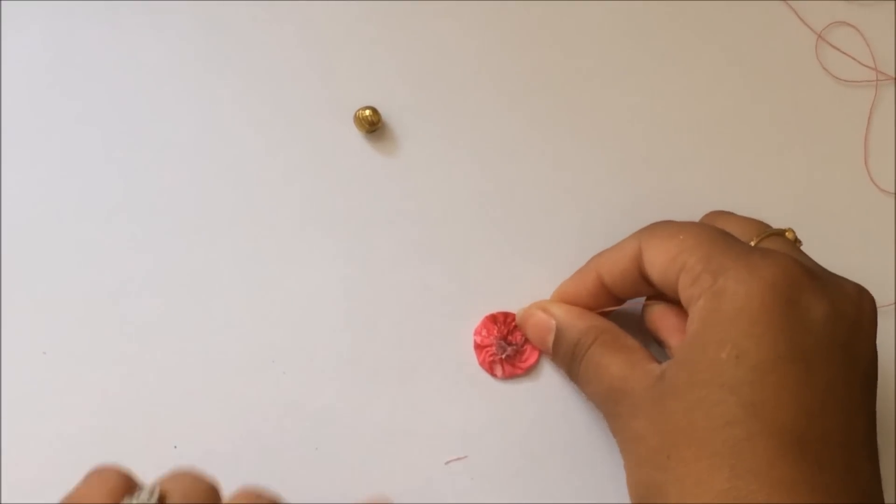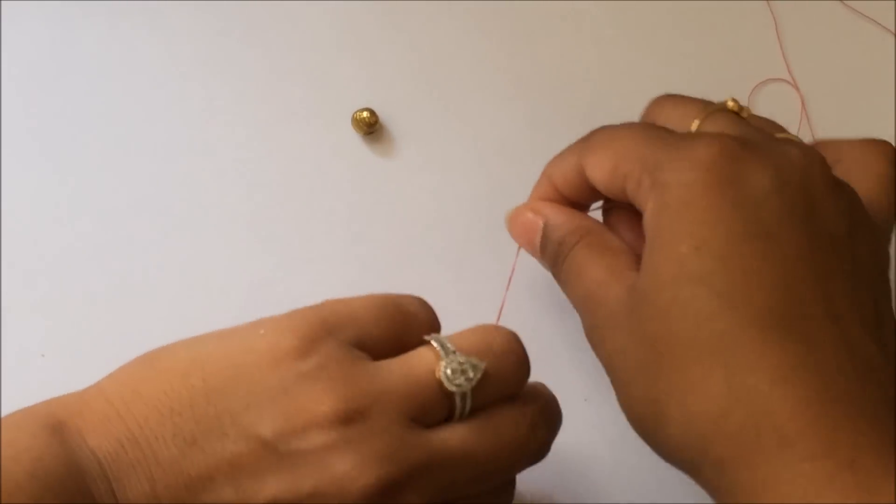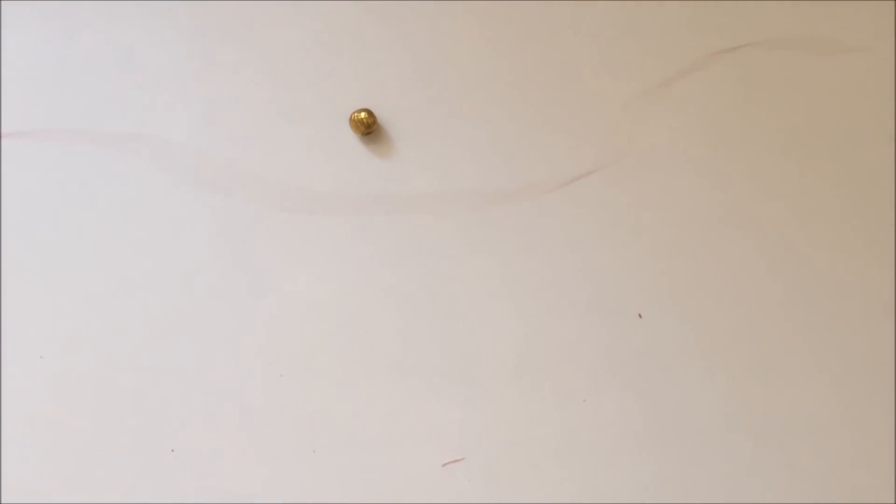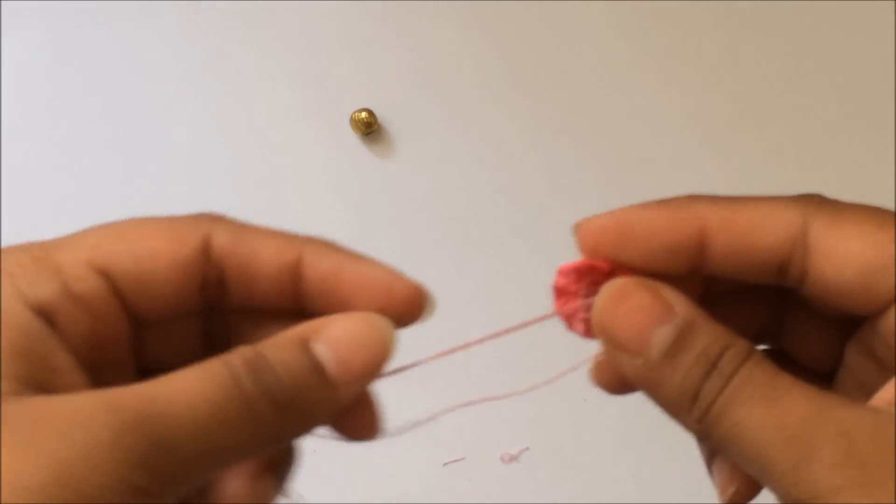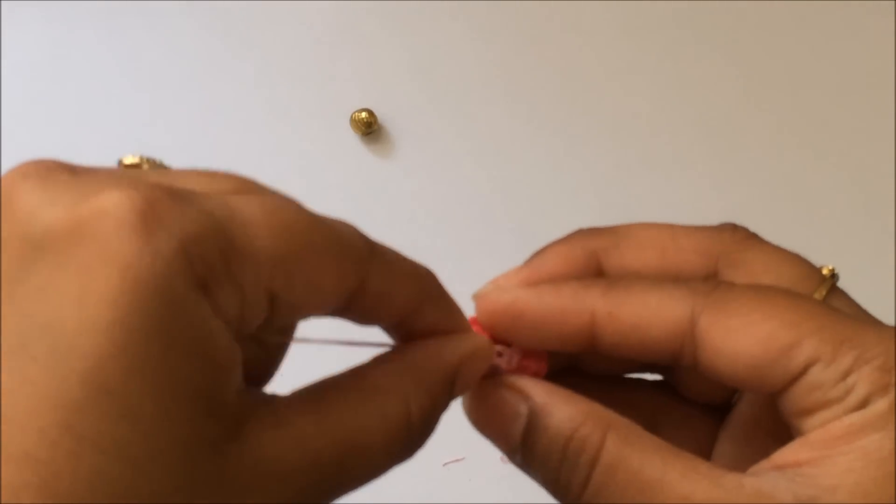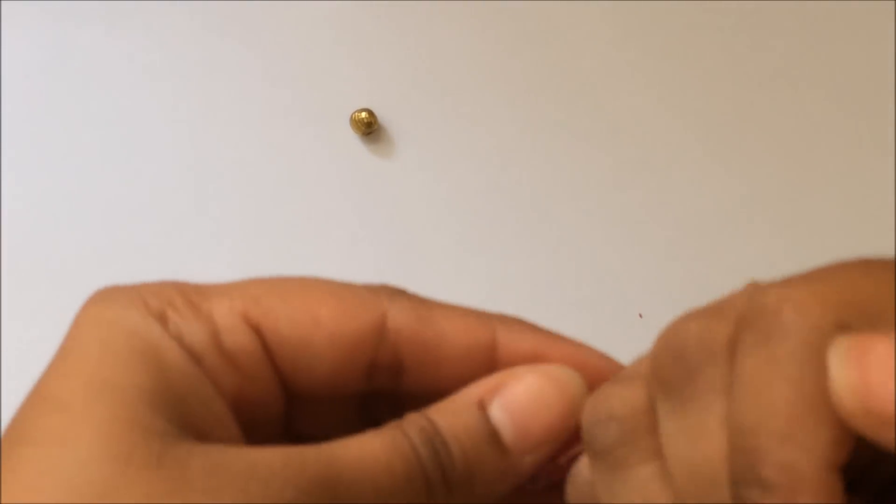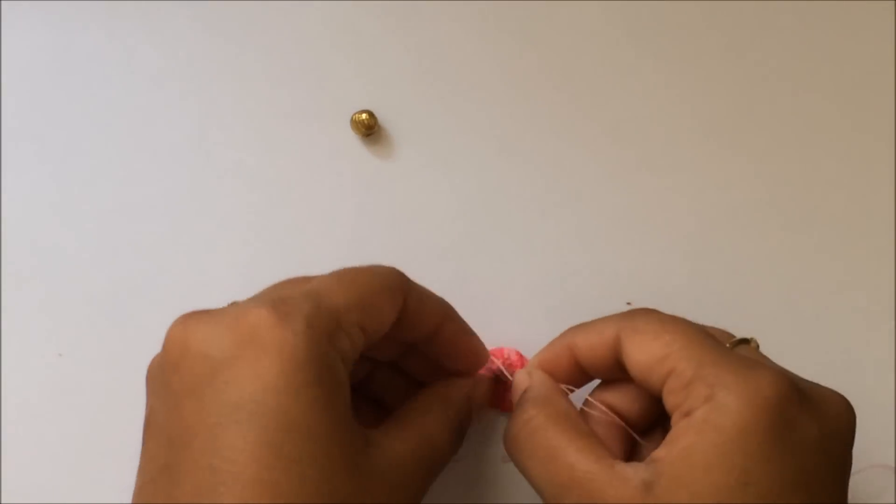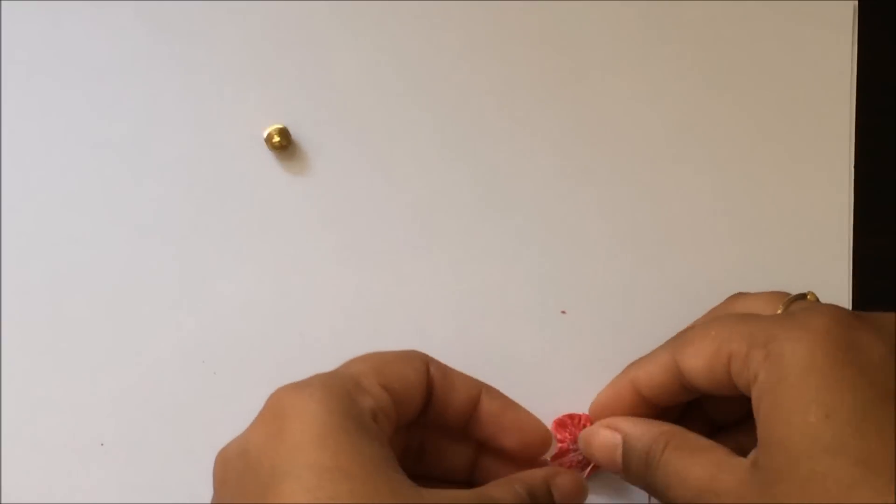Then what you need to do is tie a knot using both the ends. It should be a very tight knot so that the flower or the base doesn't get loosened up.